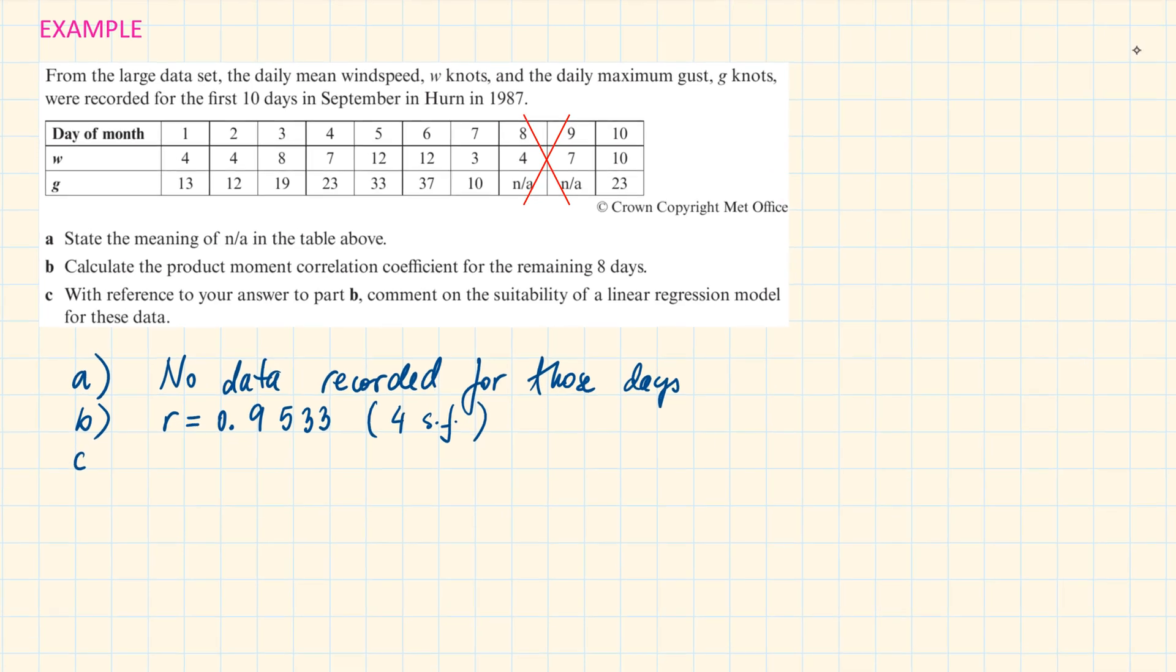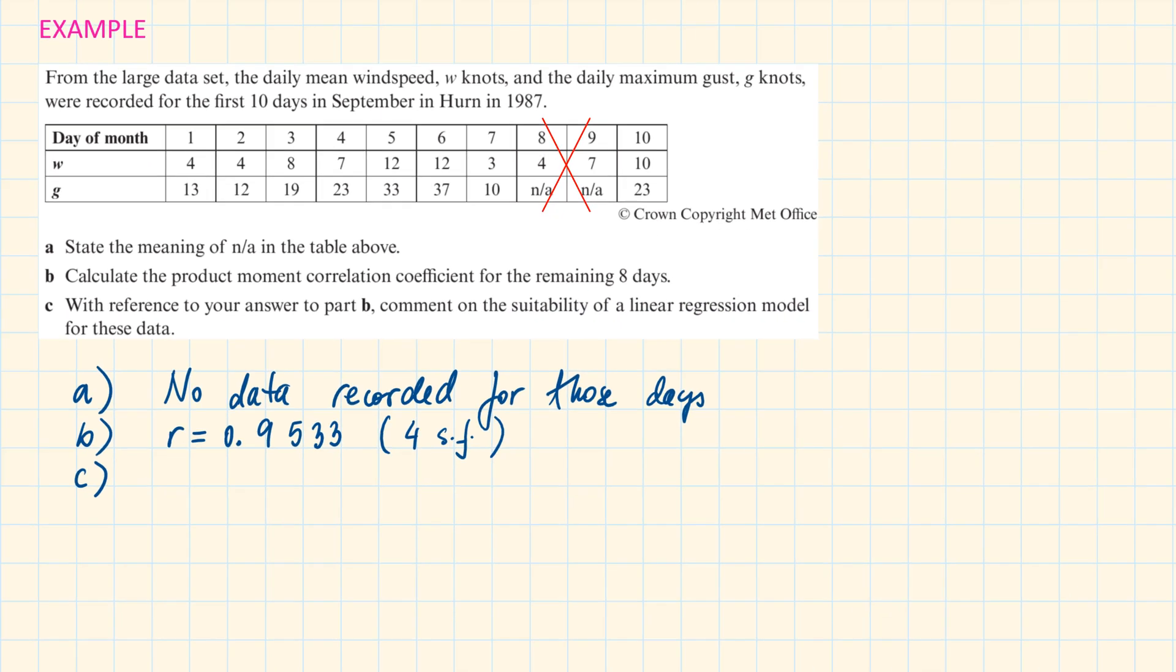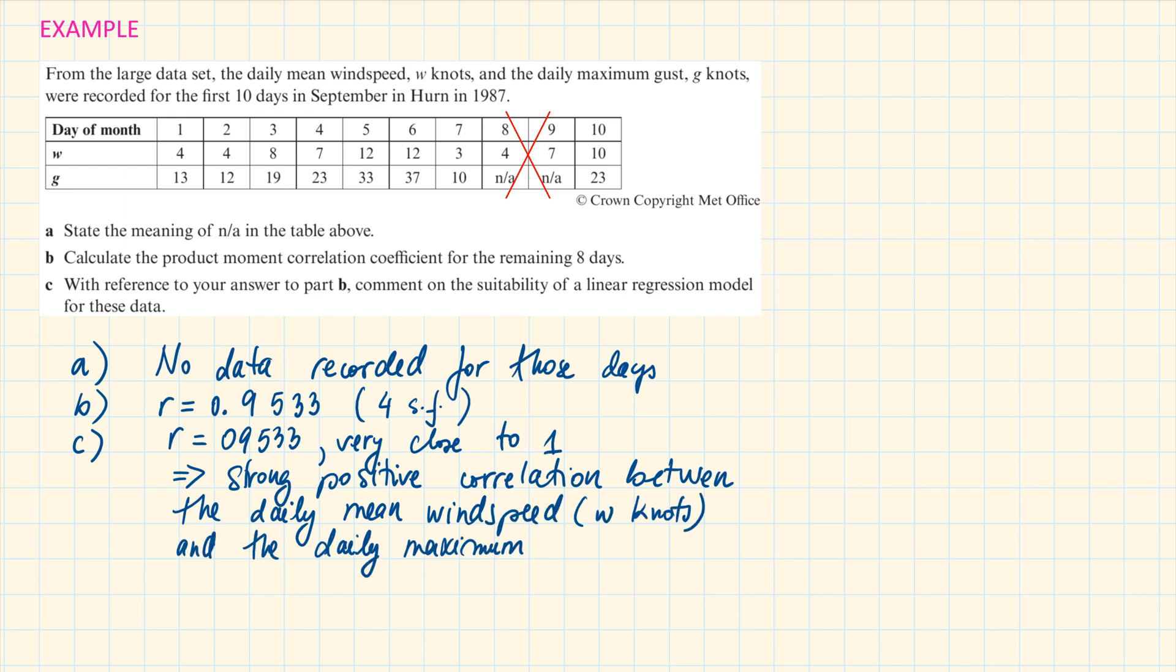Part C. With reference to your answer to part B, comment on the suitability of a linear regression model for these data. R is 0.9533, it's a number very close to 1, so we have a strong positive correlation between the daily mean wind speed and the maximum gust.